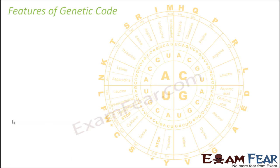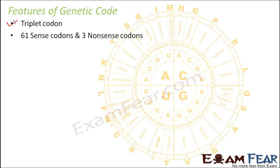Now let us talk about the features of genetic code. The first feature is that it is a triplet codon — it has a group of three bases, and triplet means three. There are 61 sense codons and three nonsense codons. The three nonsense codons do not code for any specific amino acid and are called stop codons. Whenever a stop codon is encountered, the process of translation stops.